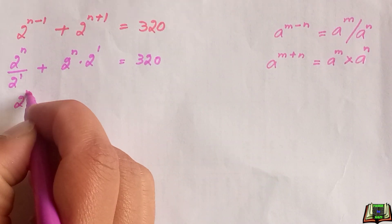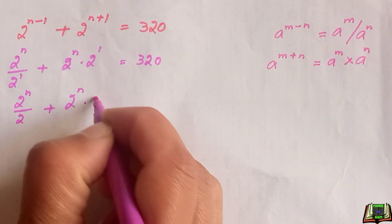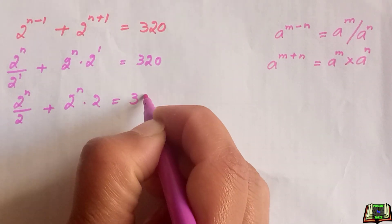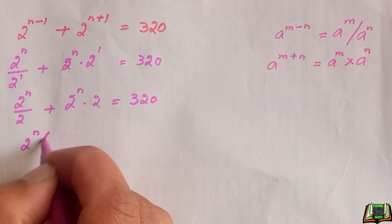This 2 raised to power 1 is equal to 2, and that equals 320. In the next step, we are going to factor out 2 raised to power n.